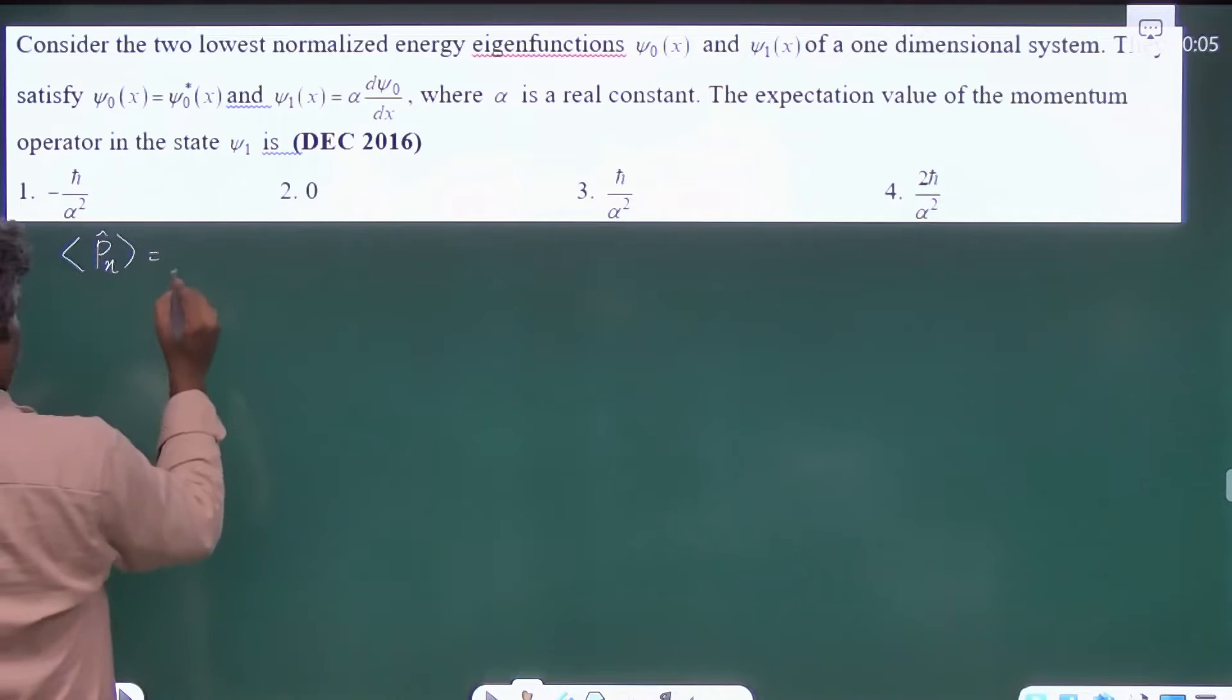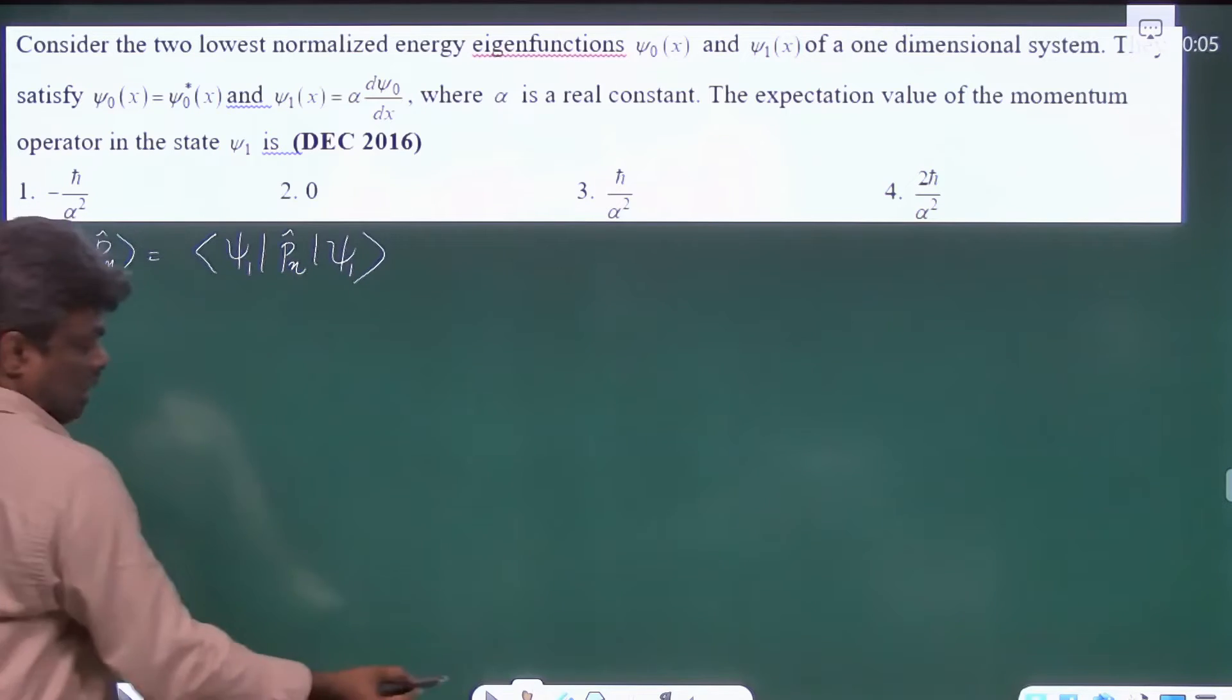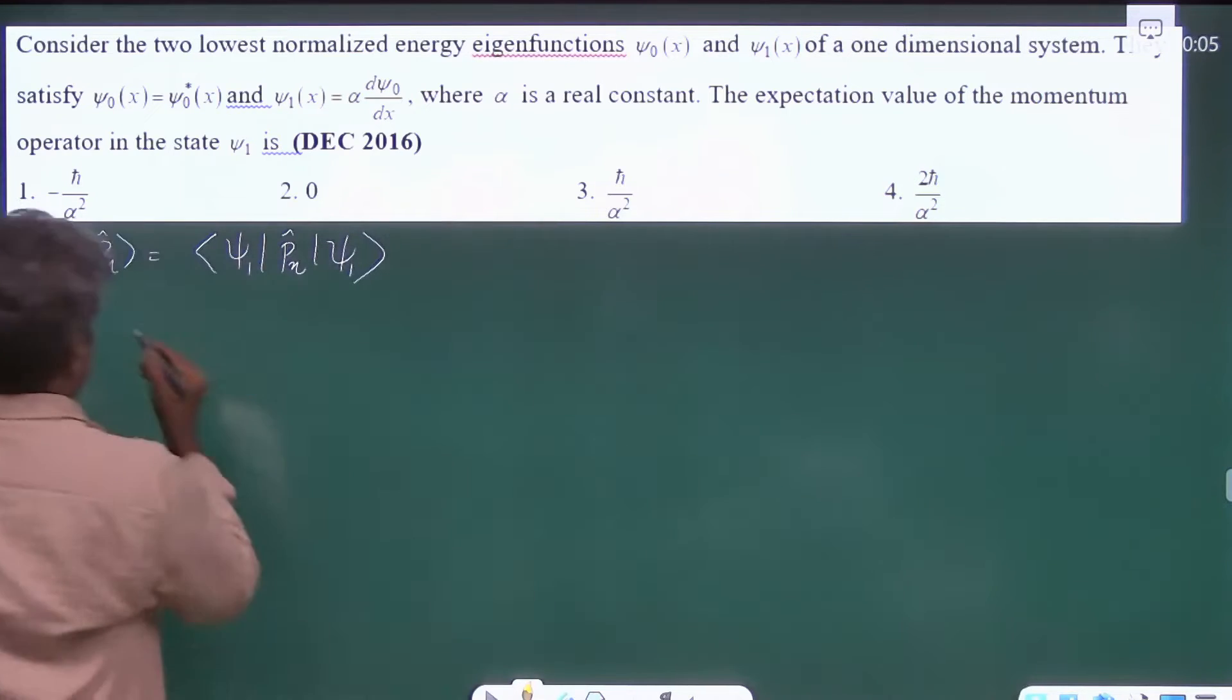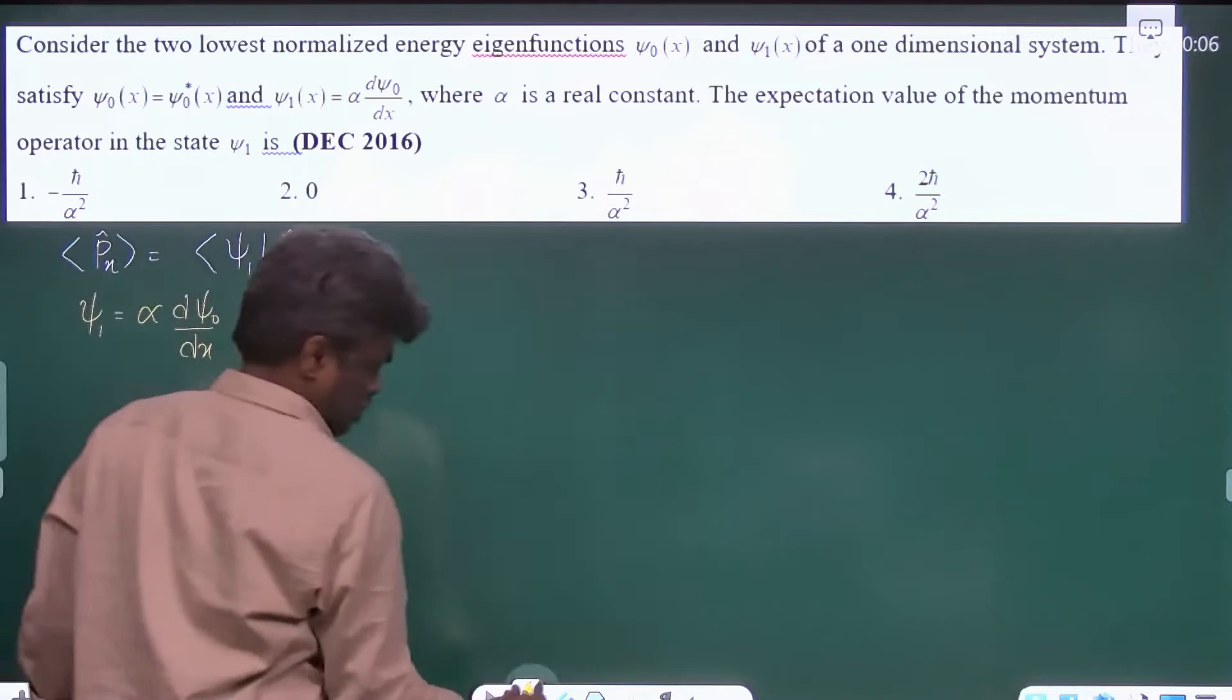px expectation is written as psi1, px cap psi1. But here they have given already one relation: psi1 is equal to alpha d psi0 by dx. If you take it and substitute here,